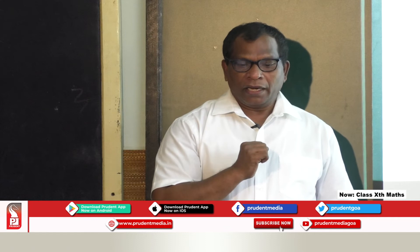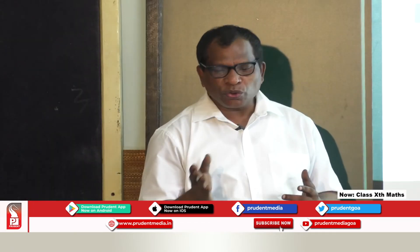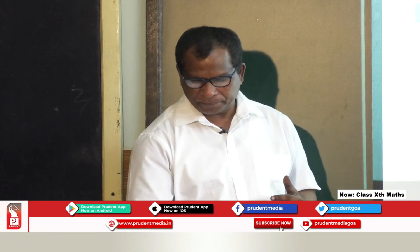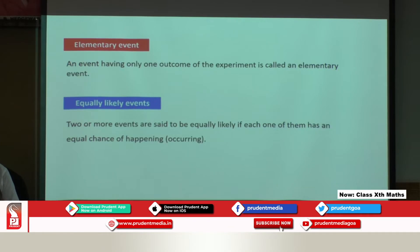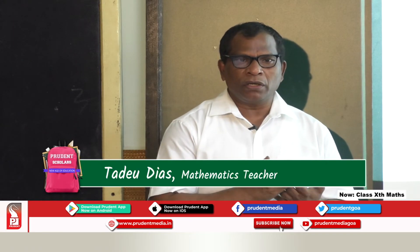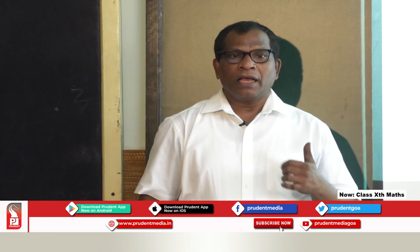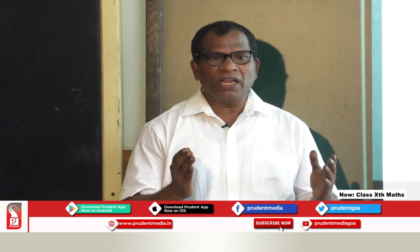An event having only one outcome of the experiment is called an elementary event. Two or more events are said to be equally likely if each one of them has an equal chance of occurring. When a coin is tossed, head and tail have equal chances of occurring. As students, we have now learnt about random experiment, outcome of an experiment, event, elementary event, and equally likely events.